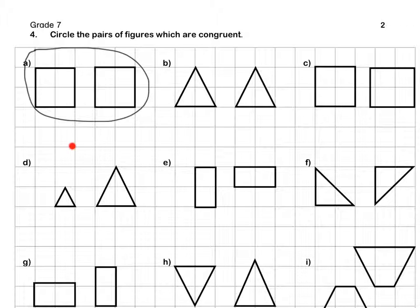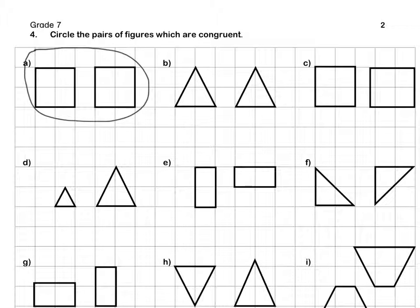Let's look at D. They are both triangles. However, they are not the same size. Therefore, they are not congruent.